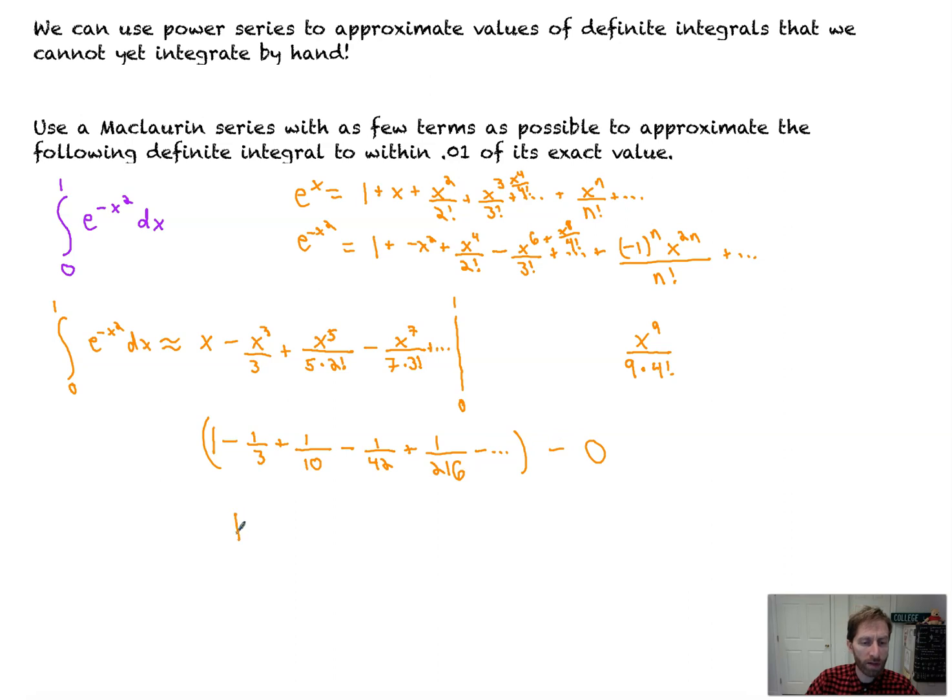So, how do we know that our approximation is going to be 1 minus 1 third plus 1 tenth minus 1 42nd? And I'm going to leave my answer like that. Because, and here's how I'll justify it, and I'll just do this out loud. This is an alternating series with terms that decrease in absolute value to 0, so it converges. That means that the error is at most the first ignored term. If we want to use as few terms as possible, the first ignored term that has a value of less than 0.01 is 1 over 216. Which means to have the fewest terms and be within 1 over 216, we would need to use those first four terms.